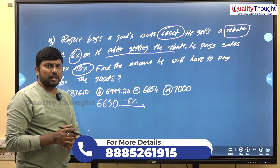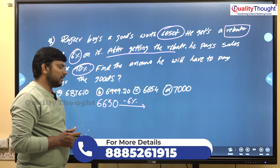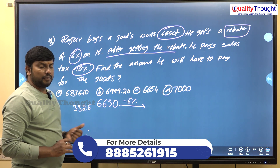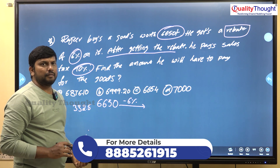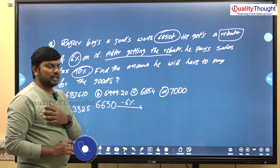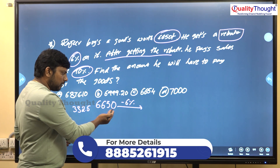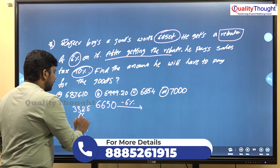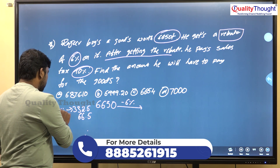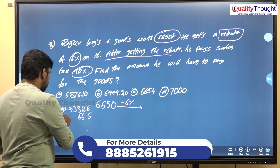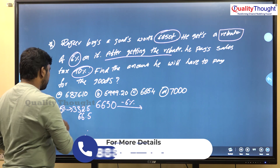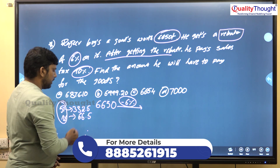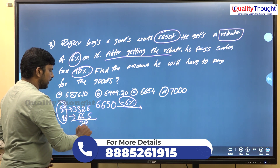10% is 665, 5% is 332.5. So 1% of 6650 is 66.5. This is the 5% value and this is the 1% value. So the 6% value — if you add 332.5 plus 66.5 — is 399 rupees.